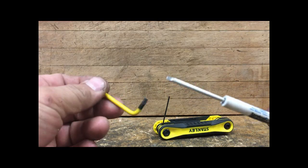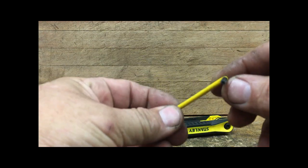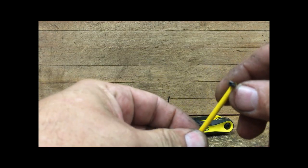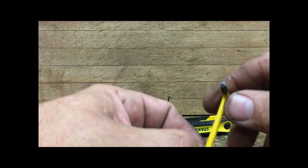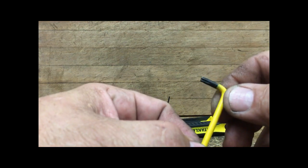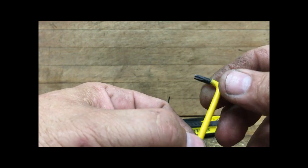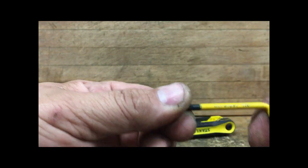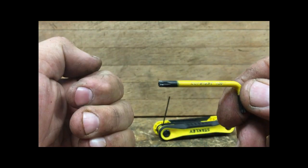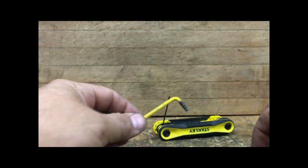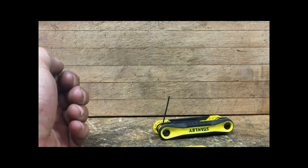The next one is called the Torx bit, see the star. It can have a hole or not, it doesn't really matter because we're not using the security things, but it does use this size and it's a T20.